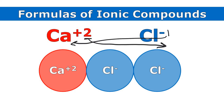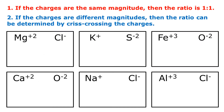It's just a math trick to figure out what the subscripts should be. So I can quickly see, even without my diagram, that the formula would be CaCl2. If the charges are the same magnitude, then the ratio is one to one — if it's plus two minus two or plus three minus three, I just need one of each because those cancel out and add to zero. But if the charges are different magnitudes, like plus two minus three or plus three minus one, then the ratio can be determined by crisscrossing the charges.